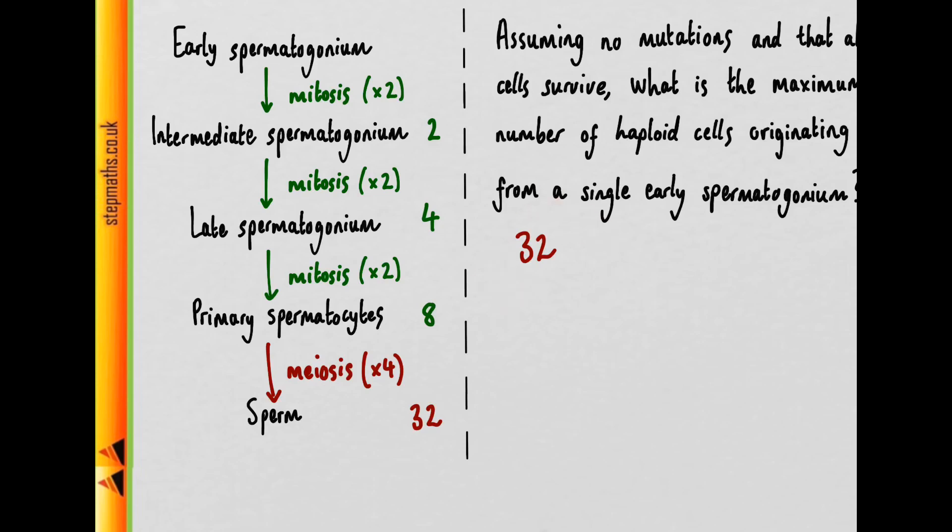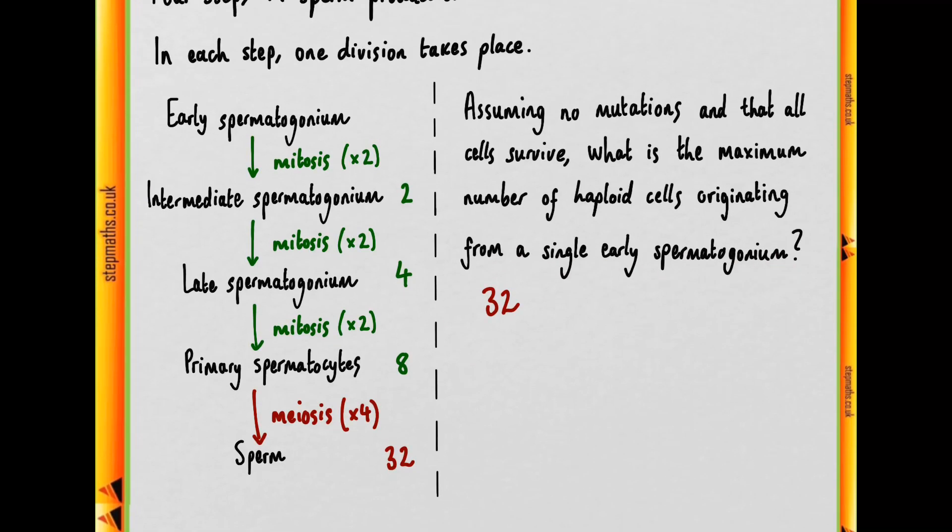So we can say that our answer is going to be 32 sperm per single early spermatogonium. That gives us our answer, which is option E.